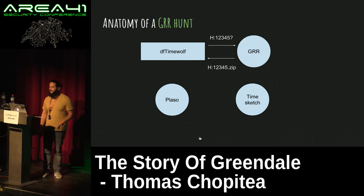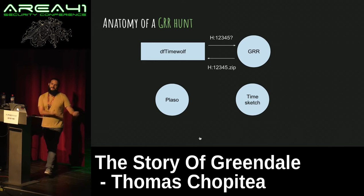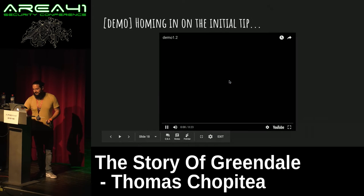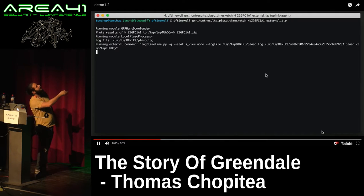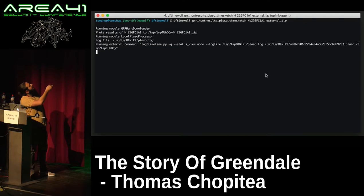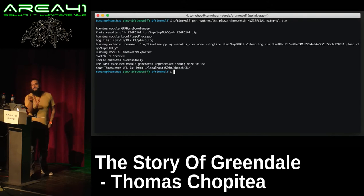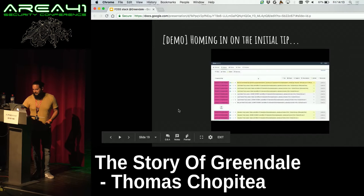We're going to use another recipe for that, which will ask Grr: do you have the results of that hunt? And Grr will say: sure, here's a zip file with all the things you asked for. We get the zip file, push it into Plazo, and send the Plazo file to TimeSketch. You use the hunt ID here — it runs the command, gets the files from Grr, the zip file, and then runs the external command log_to_timeline.py with these arguments. The Plazo file is generated, and it gives you a URL as we've seen in the first command line demo.